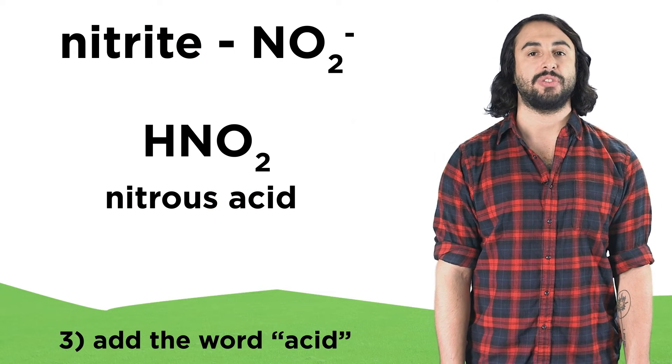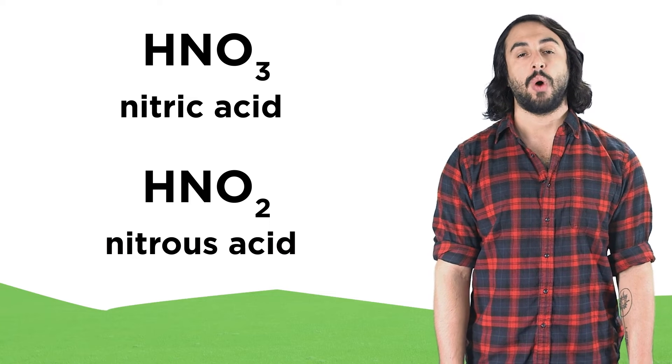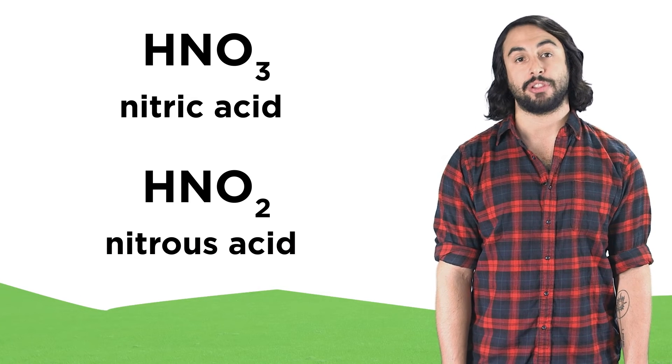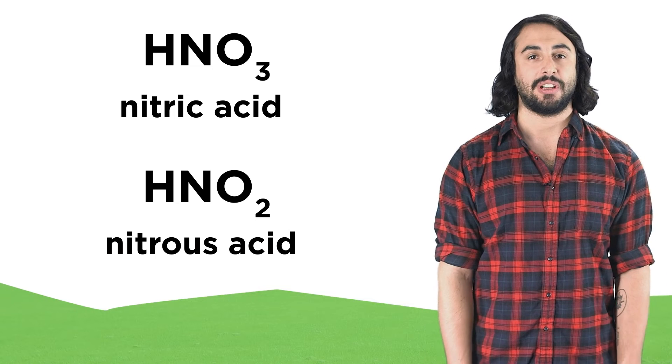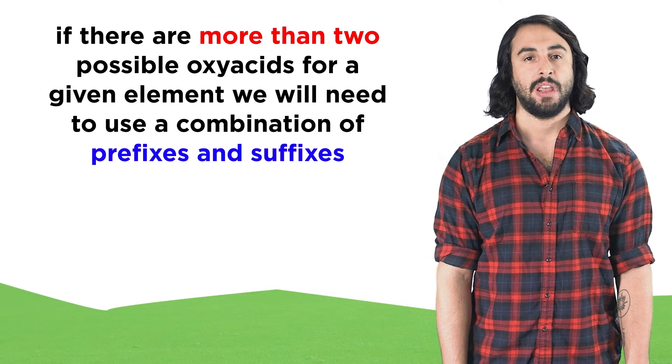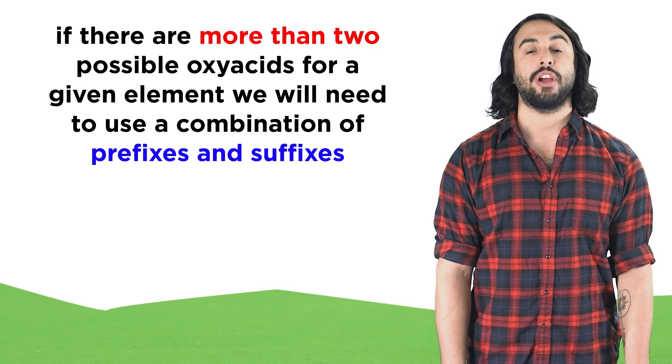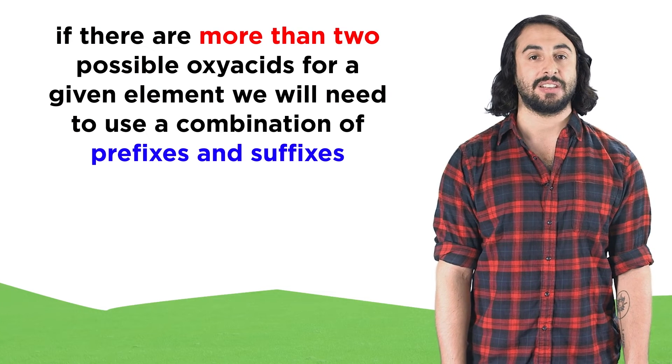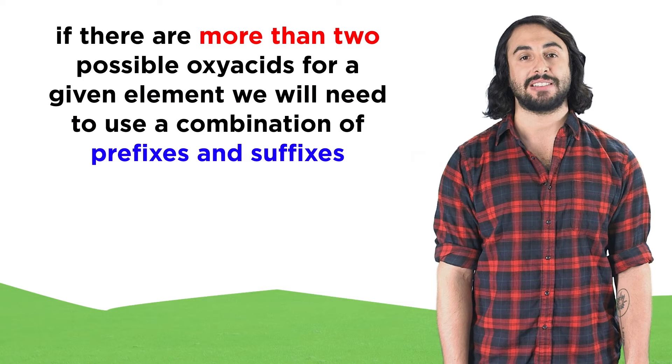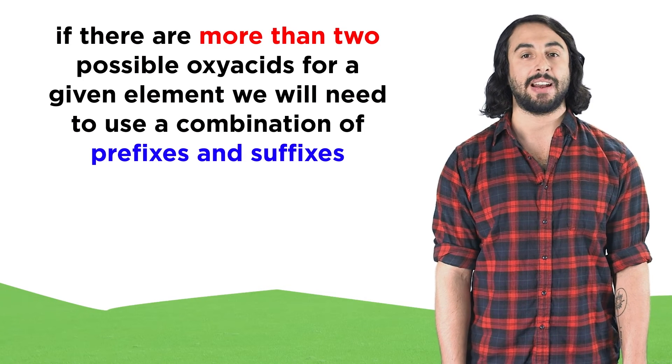If an element can only be involved in two types of oxyacids, one with more oxygen atoms and one with less, these suffixes will allow us to distinguish between them. But certain elements can generate more than two possibilities, and there are prefixes and suffixes to describe any number of oxygen atoms in the respective anion.